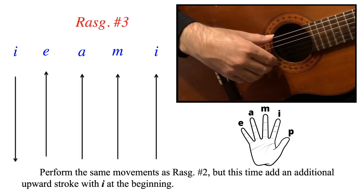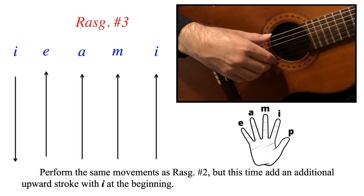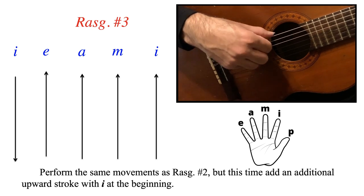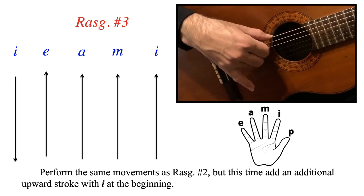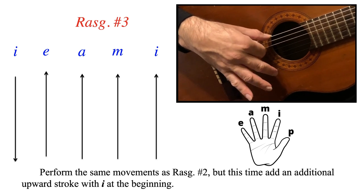Now rasqueado number 3. Here it's almost identical to number 2, but we're just adding an upward index at the beginning. So we have up I, down E, down A, down M, and down I.